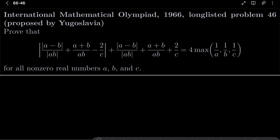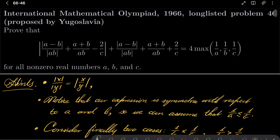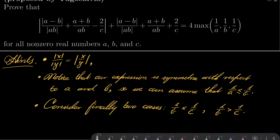Here are my hints for this problem. First, notice this basic law of absolute values: |x| / |y| is the same as |x/y|. Notice that our expression is symmetric with respect to a and b, so we can assume without loss of generality that 1/a ≤ 1/b. Finally, consider two cases: either 1/b ≤ 1/c, or 1/b > 1/c.